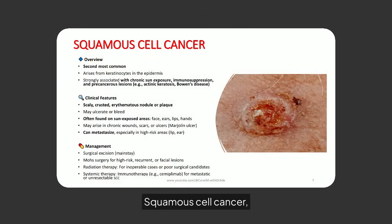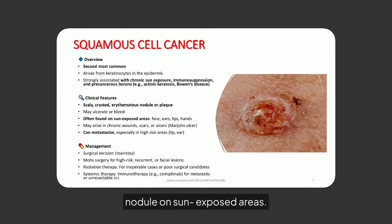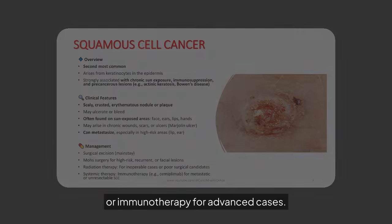Squamous cell cancer, the second most common type, arises from keratinocytes. It often appears as a scaly, crusted nodule on sun-exposed areas. This cancer can metastasize, necessitating surgical excision and possibly radiation or immunotherapy for advanced cases.